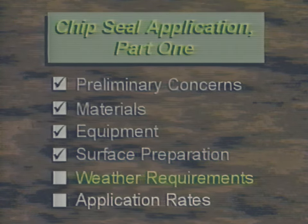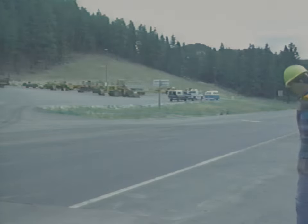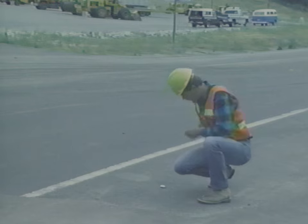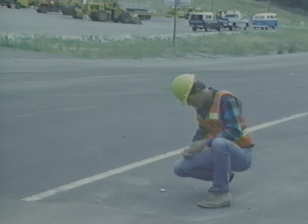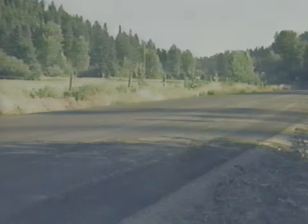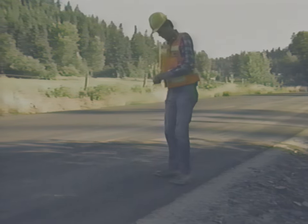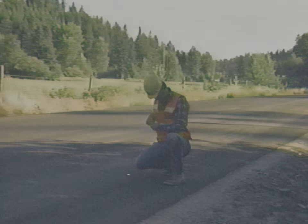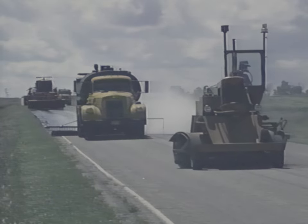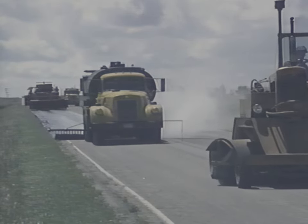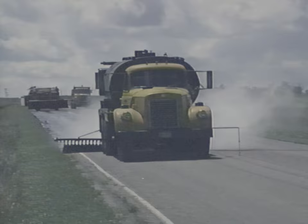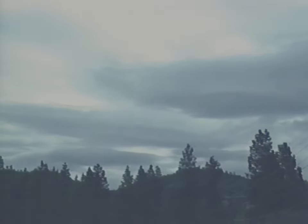Next, let's look at weather requirements. The temperature is always an important consideration. Most agencies require both the air and pavement temperatures to be at least 15 degrees Celsius and rising. Check your agency specs for the exact requirements. Keep in mind that this applies to the coolest temperature on the project — if part of the roadway is shaded, check the temperature in the shade. You should also be aware that high wind can greatly affect the binder application, so don't apply the oil if the wind speed is excessive. Nothing causes more problems than moisture, so the operation should not begin at all if rain is likely.